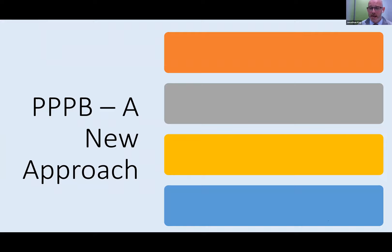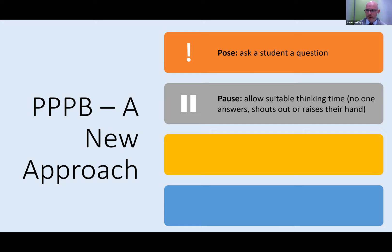That alternative approach for me is PPPB. The first thing: pose a question to everybody — ask everybody in the class a question, or ask a question where anybody might be selected to answer. Then pause — give sufficient time to formulate a response. No hands up, no talking to each other, although we can do this in groups and pairs. Ask the question to everybody, give them time to think about it, then ask for a response — pass it. So you ask the question, give a thinking pause, then 'Darren, I'm going to ask you in a bit.' Darren gives you an answer — and I'm not going to give feedback straight away. I'm going to bounce it.